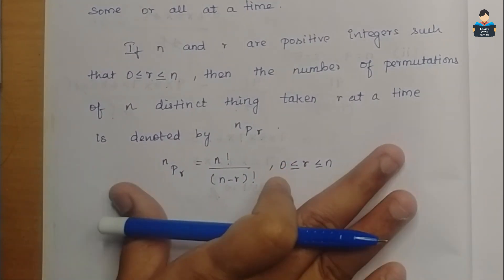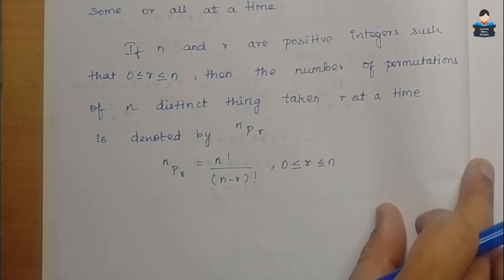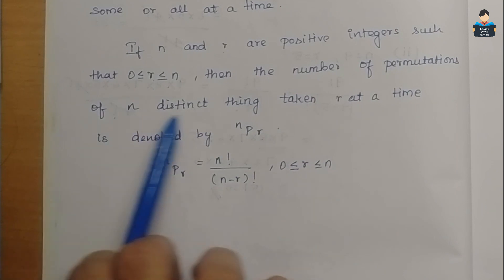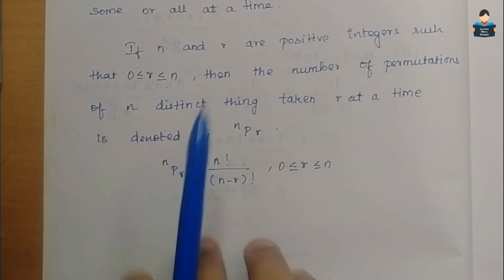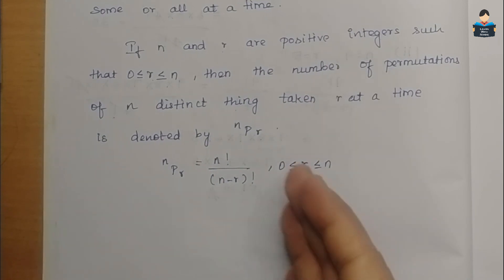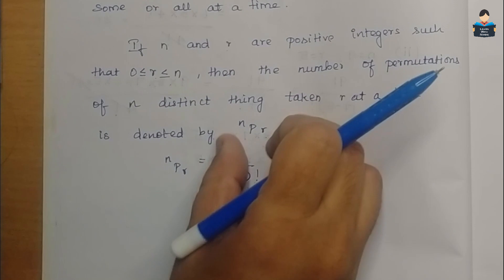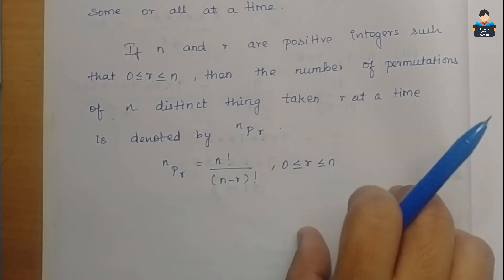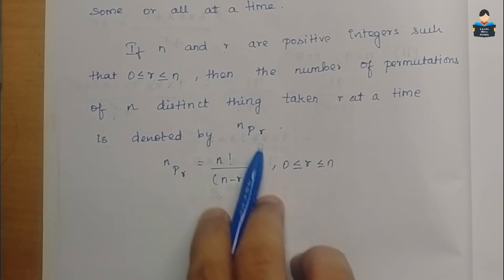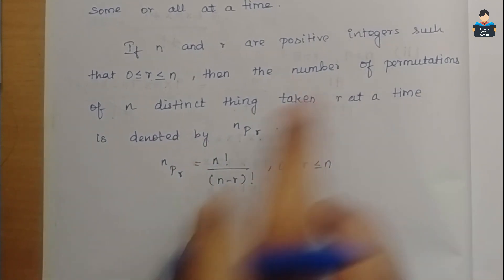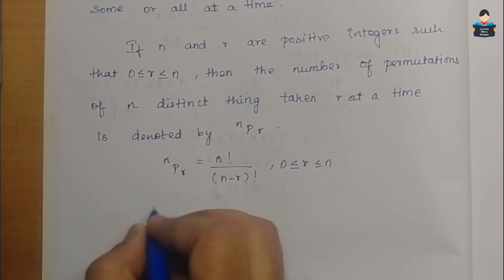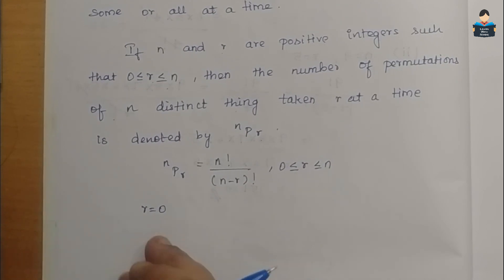This is Theorem 1. n and r are positive integers and r ranges from 0 to n. We will see the number of permutations of n distinct things. Using the first counting principle, we can see 5 objects in 3 places — that is 5P3. Now, when r is equal to 0: